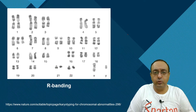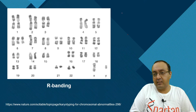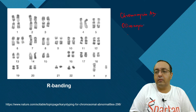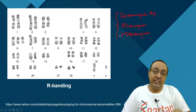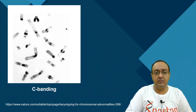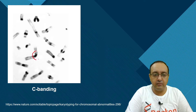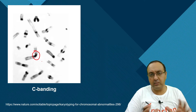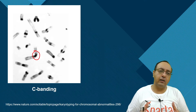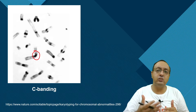A similar approach can be used for staining GC-rich DNA by using dyes like chromomycin, which specifically stain GC-rich DNA — that is the essence of R-banding. Various banding techniques are available, including C-banding, which can be used for gene mapping and location of different genes on chromosomes.